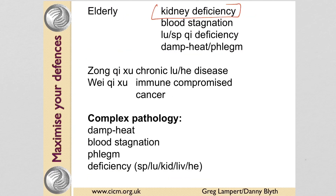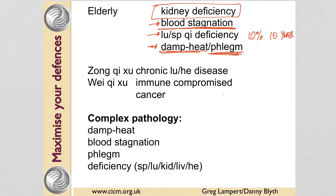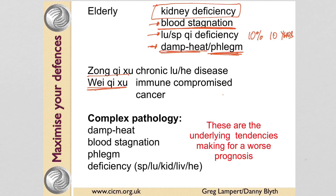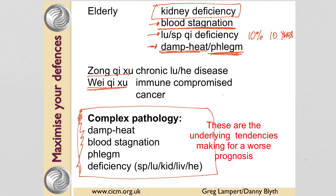For the elderly we always think of kidney deficiency, but even more so blood stagnation — blood stagnation typifies the ageing process, along with some degree of lung and spleen Qi deficiency. The lungs lose roughly 10% of their capacity every decade after about age 50. We also see a chronic build-up of damp-heat as in diabetes, autoimmune diseases, and phlegm — as in being overweight or obese. In the immune-compromised we're looking at generalised weak Qi. These are the things we want to focus on to keep ourselves healthy.